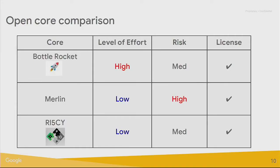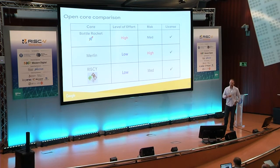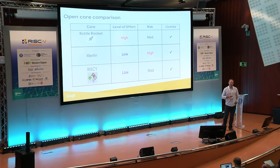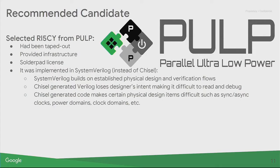Finally, RI5CY we considered a low level of effort. It's in SystemVerilog, which our team is very familiar with, fits well into our flows, and comes with clear and concise documentation. The risk was medium — RI5CY had some extensive use at the time, with self-checking tests, so it looked like a working core. It is offered under the Solderpad license, which for those who don't know is similar to Apache 2.0 with some added context for hardware. At the end of the day, we chose to move forward with evaluating the RI5CY core from PULP.